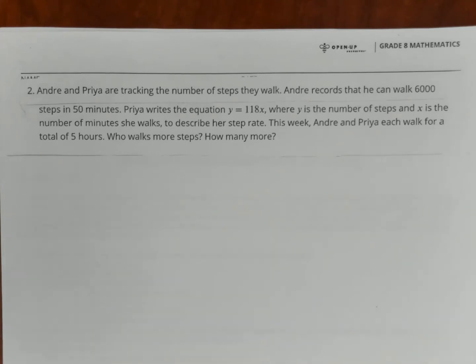Andre and Priya are tracking the number of steps they walk. Andre records he can walk 6,000 steps in 50 minutes. Priya writes the equation Y equals 118X, where X is the number of steps, and Y is the number of minutes she walks to describe her step rate. This week, Andre and Priya each walk for a total of five hours. Who walks more steps? How many more?